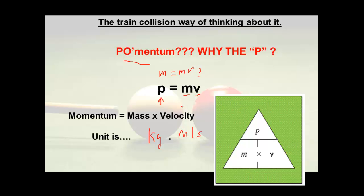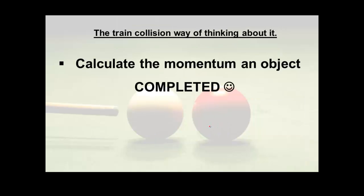So P is momentum, go figure. Anyway, if you like a triangle here's a triangle. Very quickly, if you were asked to find the velocity given the momentum and the mass, all you do is you cover this up with your finger and then you divide P by M to get V. That's pretty much it. So now you can calculate the momentum of an object. The end.